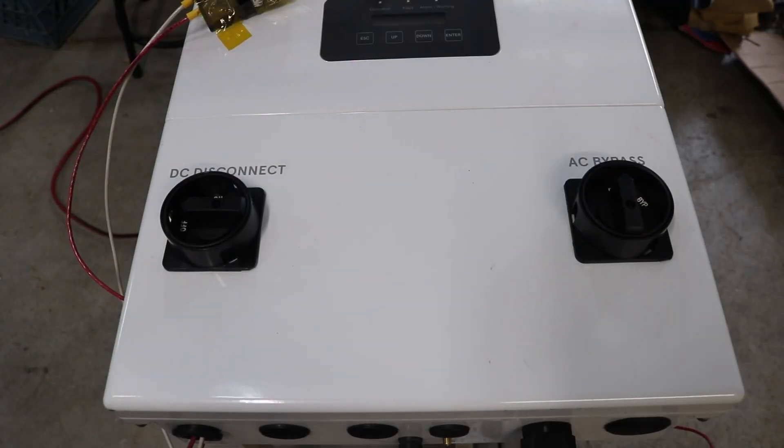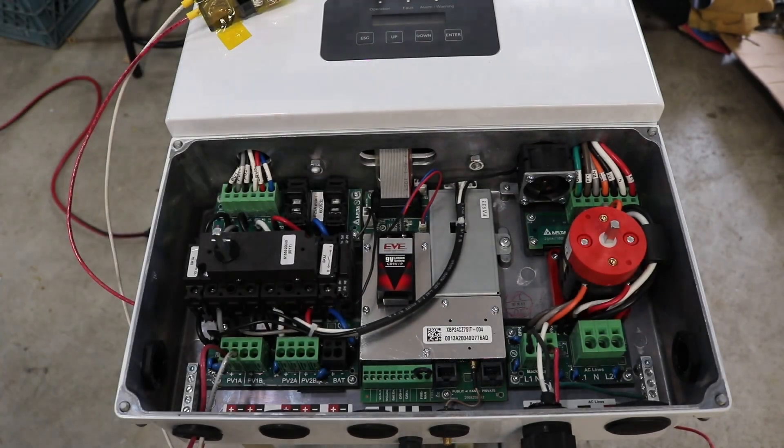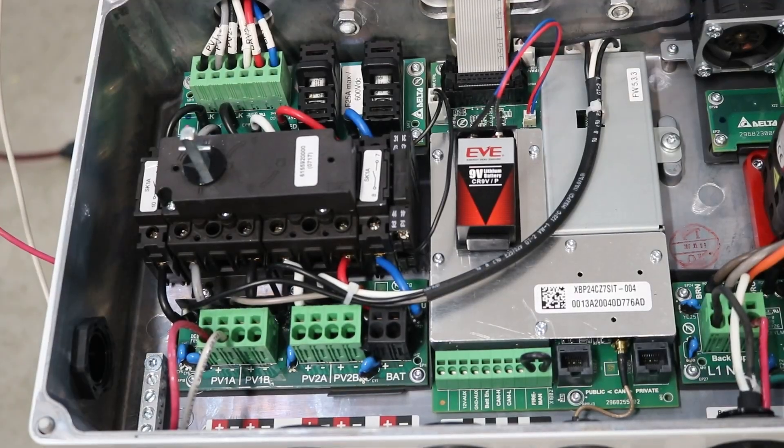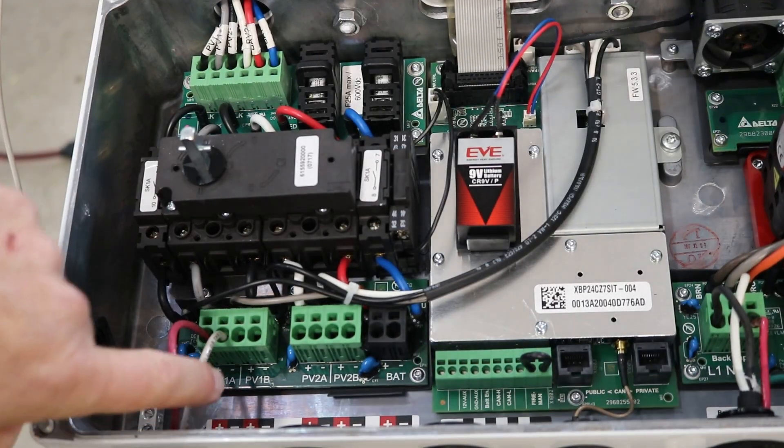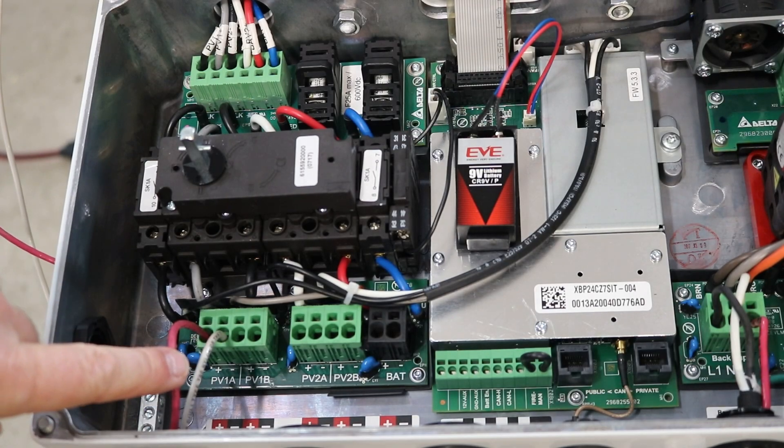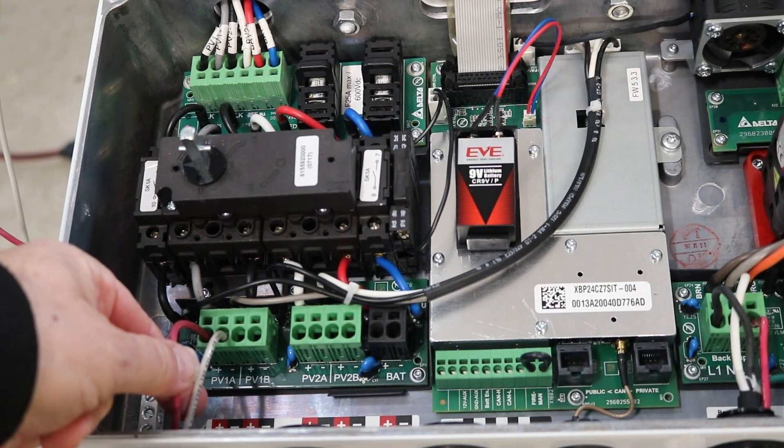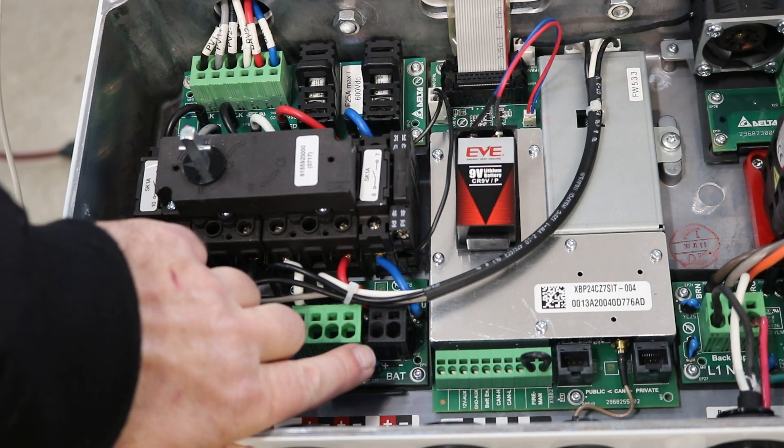So now let's take a quick look inside the inverter. So if we start on the left we can see right here is our photovoltaic input. I've got a pair of wires running to that.